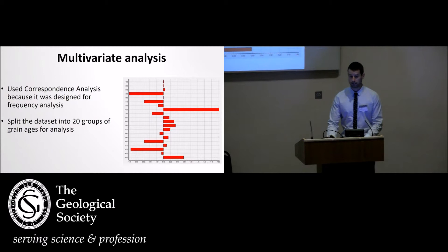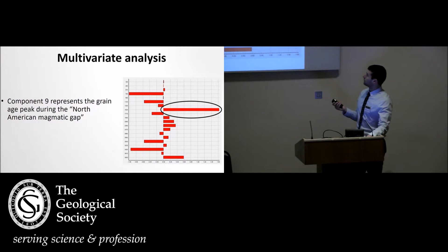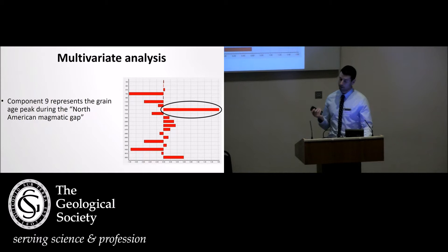Moving on to multivariate statistics or analysis. We used correspondence analysis because it was designed for frequency analysis. We are treating grain ages essentially as frequency counts. We created 20 bins—20 groups of grain ages for analysis. We can see here that component nine represents the grain age peak at 1520 million years, which is representative of the North American magmatic gap.